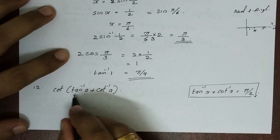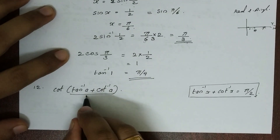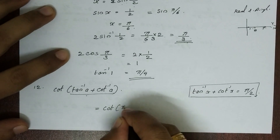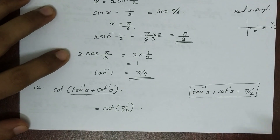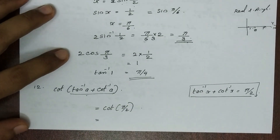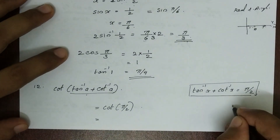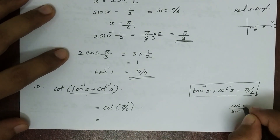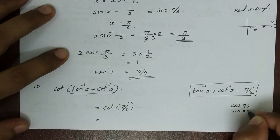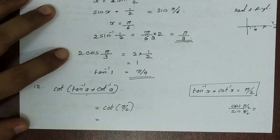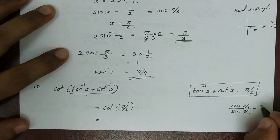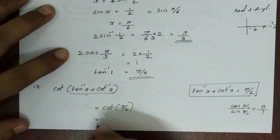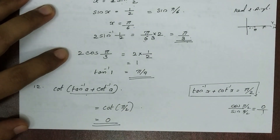So from this, the expression becomes cot of pi by 2. Now, cot of pi by 2 equals cos pi by 2 divided by sin pi by 2. Cos pi by 2 is 0 and sin pi by 2 is 1. So 0 divided by 1 equals 0. The answer is 0.